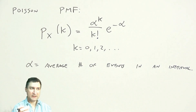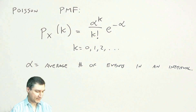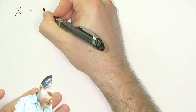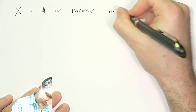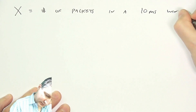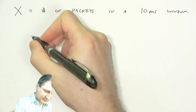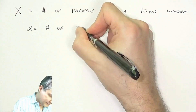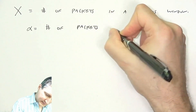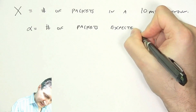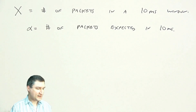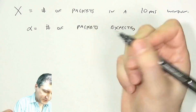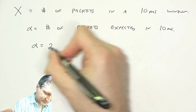This is something where I, as a user, parametrize this by observing or setting a value of alpha. So let's do some examples. Let's suppose that x is the number of packets arriving at my router in a 10-millisecond window, and alpha is the number of packets expected in this window.